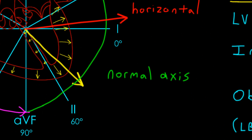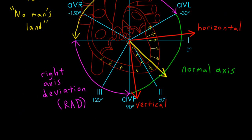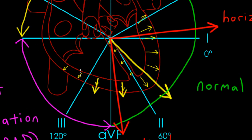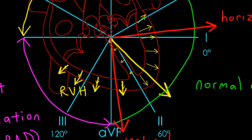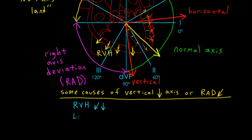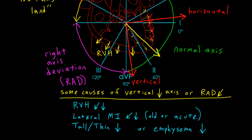Now let's say we drew a QRS axis pointing down here — I would call this a vertical QRS axis. It is in the normal range; however, the kinds of things that produce right axis deviation or a vertical QRS axis are mostly the opposite of what produces left axis deviation. For example, right ventricular hypertrophy increases forces on the right side, producing a more vertical or frankly right-axis-deviated QRS. Also, an MI in the vicinity of the lateral leads — leads 1, AVL, V5, and V6 — can cause a vertical QRS or right axis deviation. A patient who is tall and thin or has emphysema is more likely to have a more vertical heart.